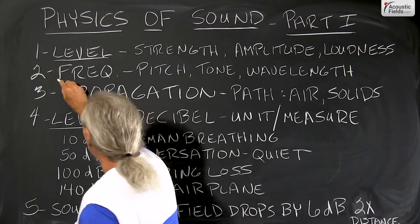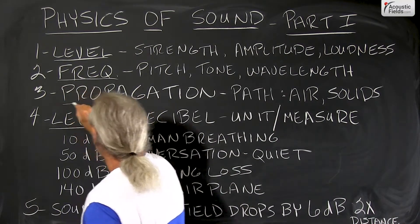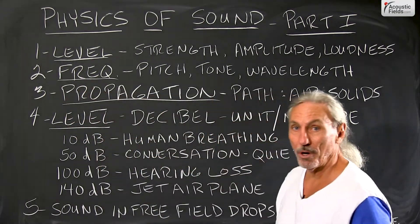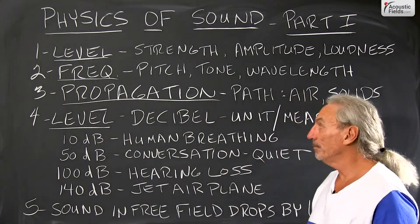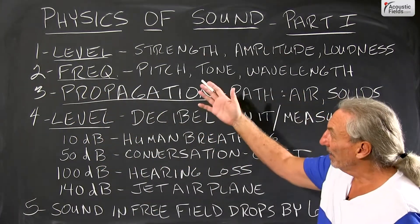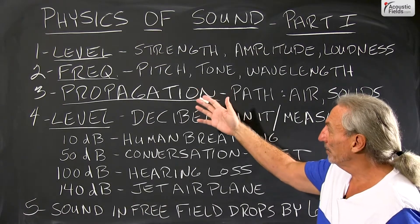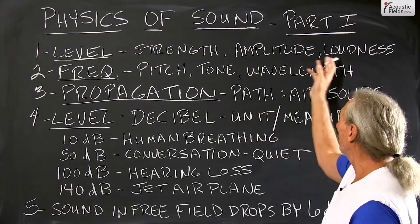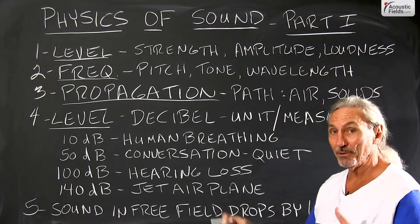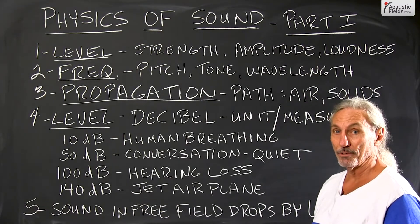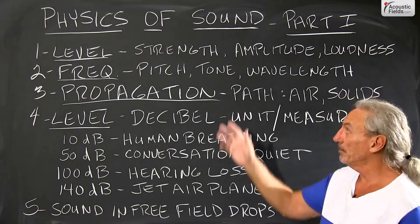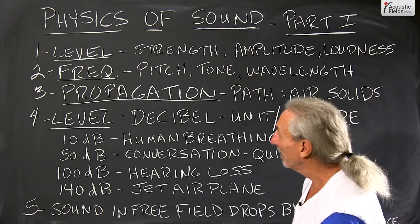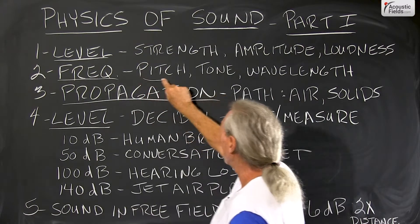There are three major parts that we need to look at when we're dealing with audio in our rooms. We have level, frequency, and propagation. Level is the strength, the amplitude, the loudness — that's one of the characteristics of the physics of sound.